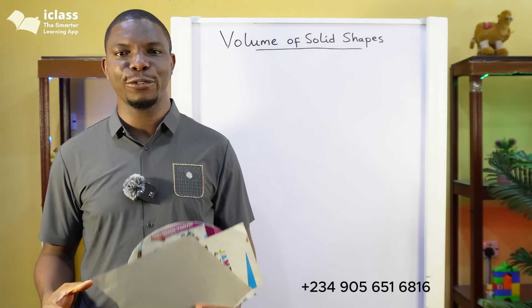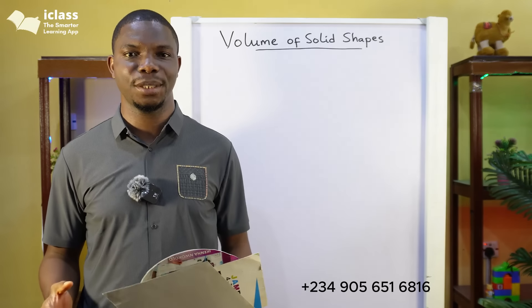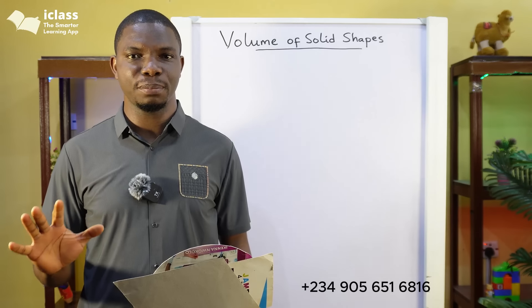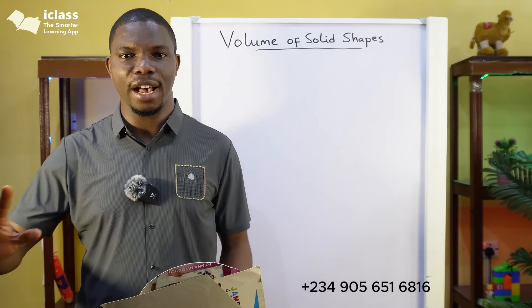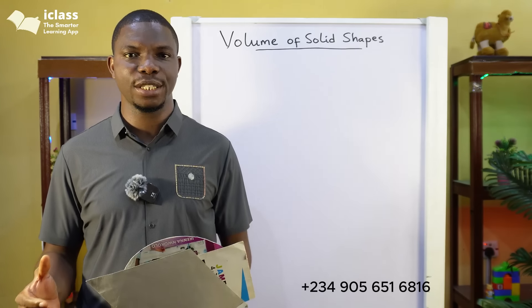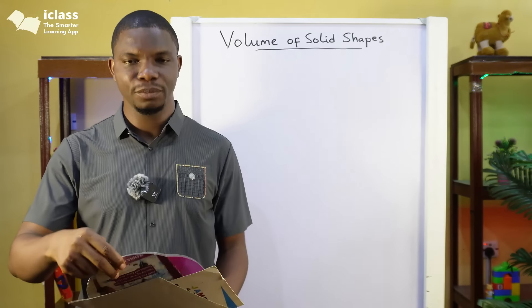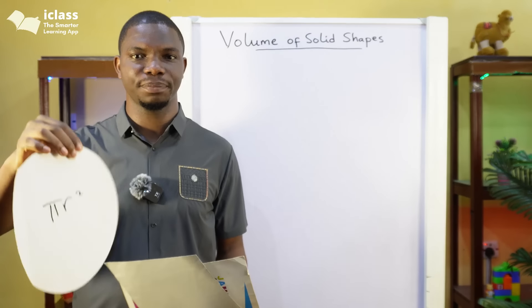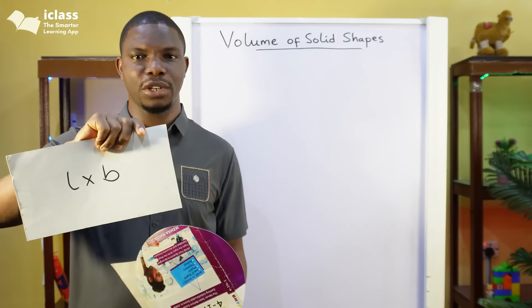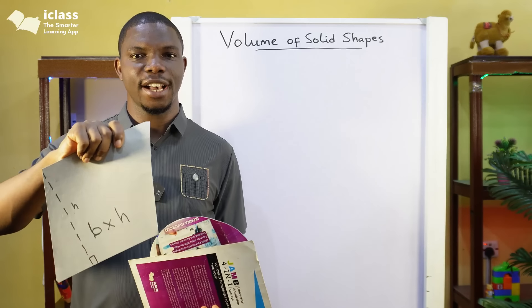Today we'll be looking at the volume of solid shapes. Last time we looked at the area of plane shapes. We said that plane shapes are flat shapes and that the area of a plane shape is the amount of space that each surface covers. We gave various formulas: for a circle it is pi r squared, for a rectangle it is length times breadth, and for a parallelogram or a rhombus it is base times height.